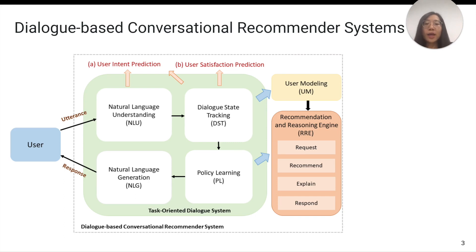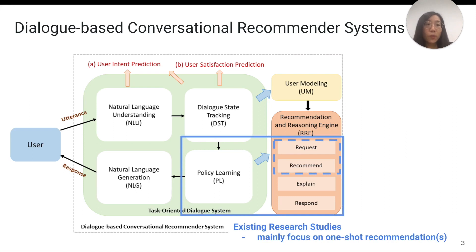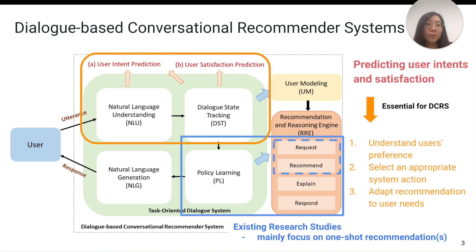Currently, most existing studies can only handle one-shot recommendations, which means the system will end the conversation after presenting one or multiple recommendations to the user, no matter if the user is satisfied with the recommendation or not. But in reality, users may interact with the recommender in multiple turns until they find the desired item. So to build a multi-turn dialogue-based conversational recommender system, it's vitally important to predict the user's intents.